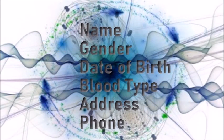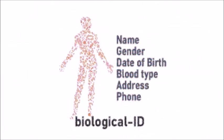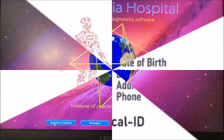Required information that determines your Quantum ID are name, gender, date of birth, blood type, address, and phone.